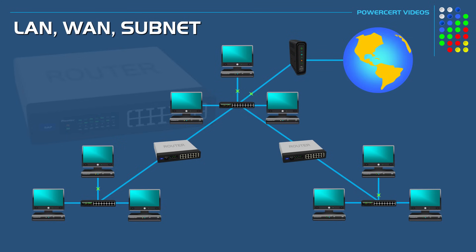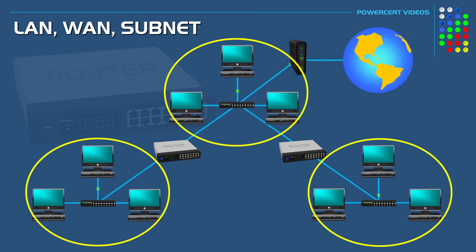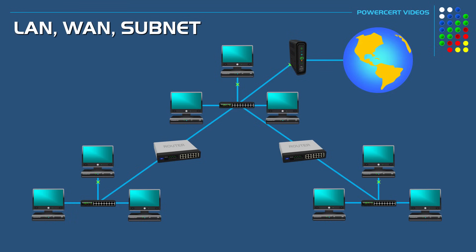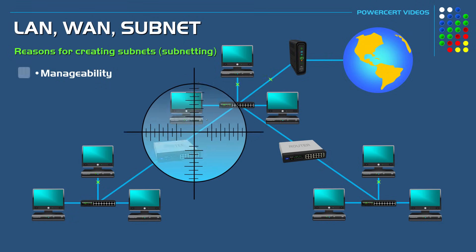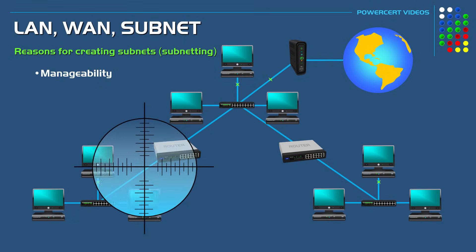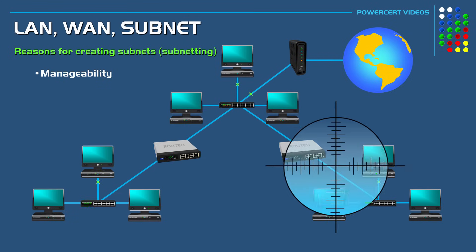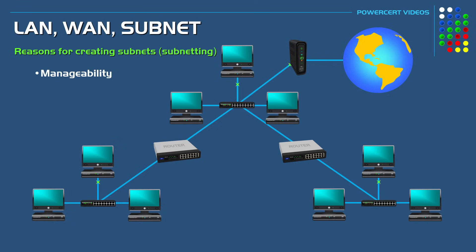So if this business expanded and wanted to create another department, they can further separate this network and create a third subnet by adding another router. So now this local area network has three subnetworks or subnets. The reason why an organization or business would create subnets is to separate the network traffic. This could be for several different reasons such as manageability, because if any problems happen on a network it would be easier to pinpoint on smaller networks than one large network. Another reason is for security — subnets can have their own separate security rules to either allow or deny access to certain data.